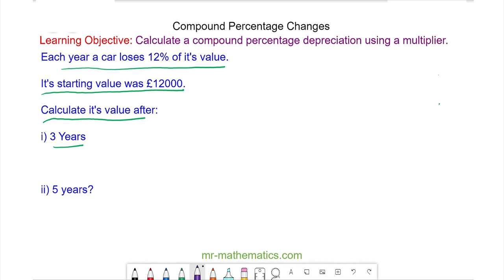There's two ways of doing this question. We'll do it one way and then we'll see if we can try and make it more efficient. Because the starting value is £12,000 this is 100% and it loses 12% of its value every year. So we're taking away 12% which is 88%.